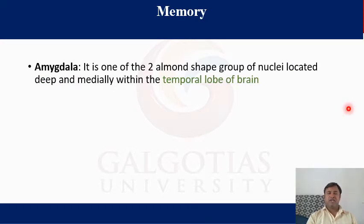The amygdala is also part of memory. It is one of two almond-shaped groups of nuclei located deep and medially within the temporal lobe of the cerebral cortex.